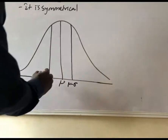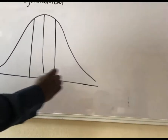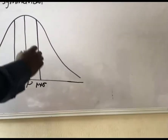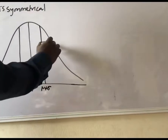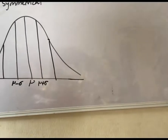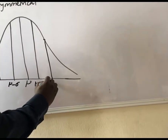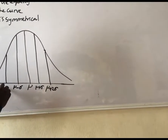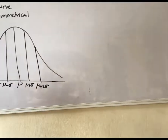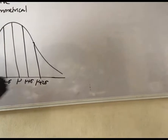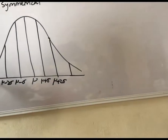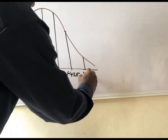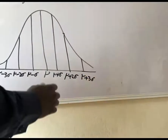On the right side, we have mean plus one standard deviation. The second one, we have another deviation further on the left — this is two deviations from the mean. On the right side, we have another two deviations from the mean. At the extreme, we have three deviations from the mean on the left side, and three deviations from the mean on the right side.